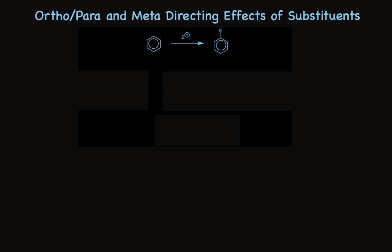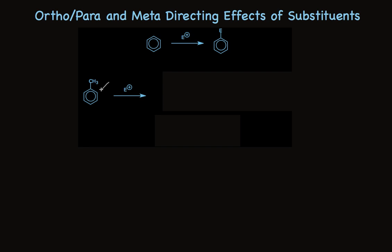What's different if that benzene molecule already has a substituent on it? I put a methyl group there as an example — it's one of many possibilities. Now it becomes important to notice that there are two ortho positions, meta positions, and a para position. So when we write products, we have to take that into consideration.